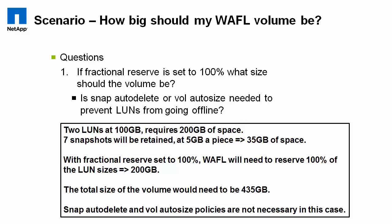If fractional reserve is set to 100 percent, and this is assuming the volume is guaranteed and fractional reserve is specified at 100, the implication is that LUN space reservation is enabled. Fractional reserve is only effective on a LUN when LUN space reservation is enabled. This kind of configuration is what we sometimes refer to as full fat provisioning, or thick provisioning. The mathematical formula to describe that is 2x plus delta, where x is the sum of the size of all LUNs, and delta is essentially the sum of the size of all snapshots.